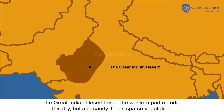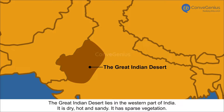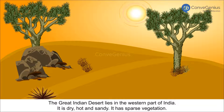The Great Indian Desert lies in the western part of India. It is dry, hot and sandy, and has sparse vegetation.